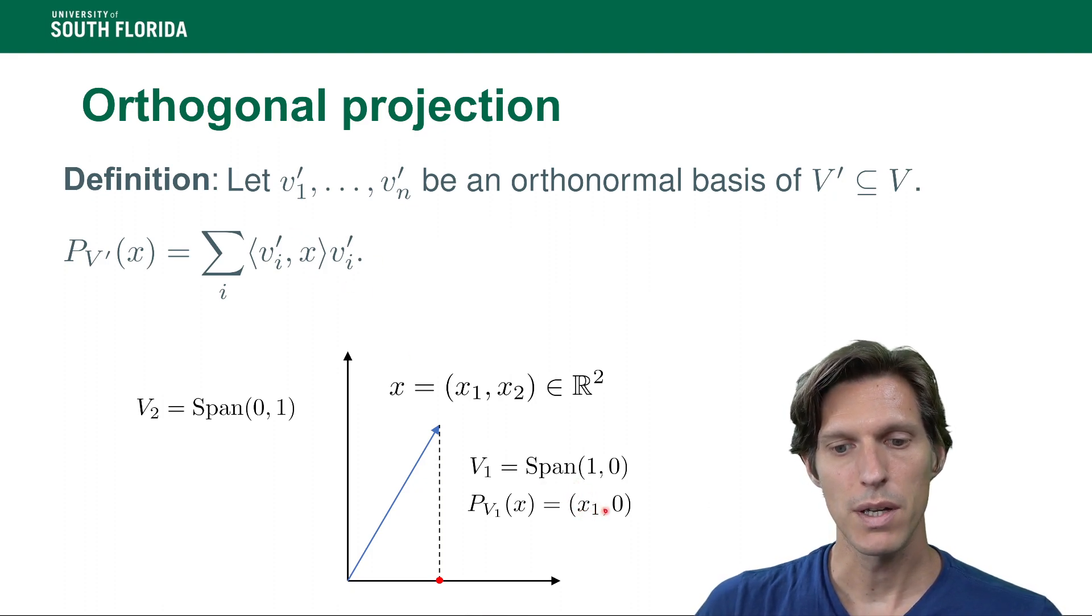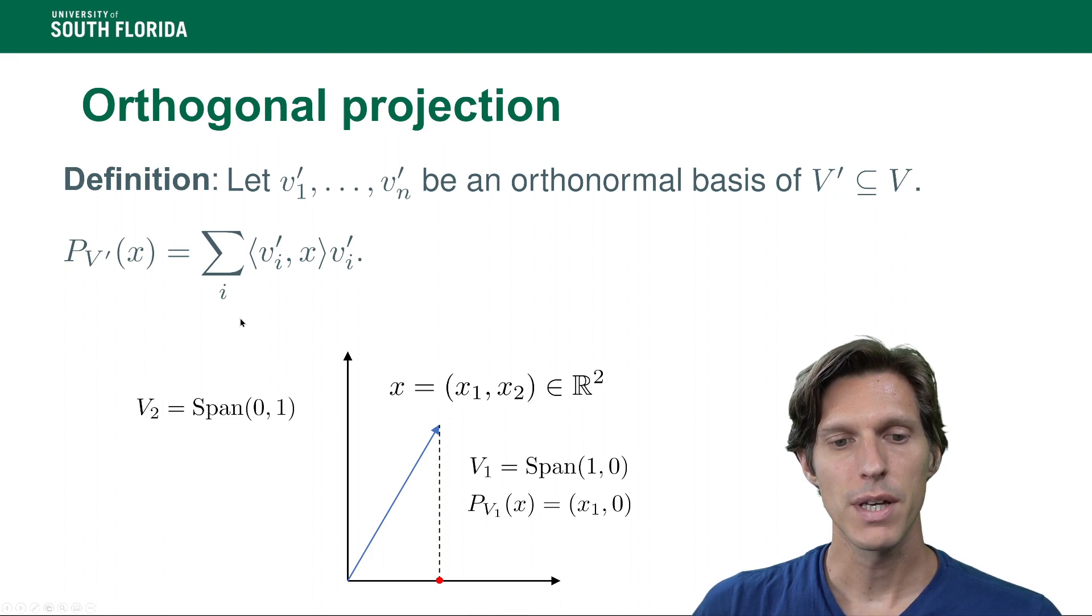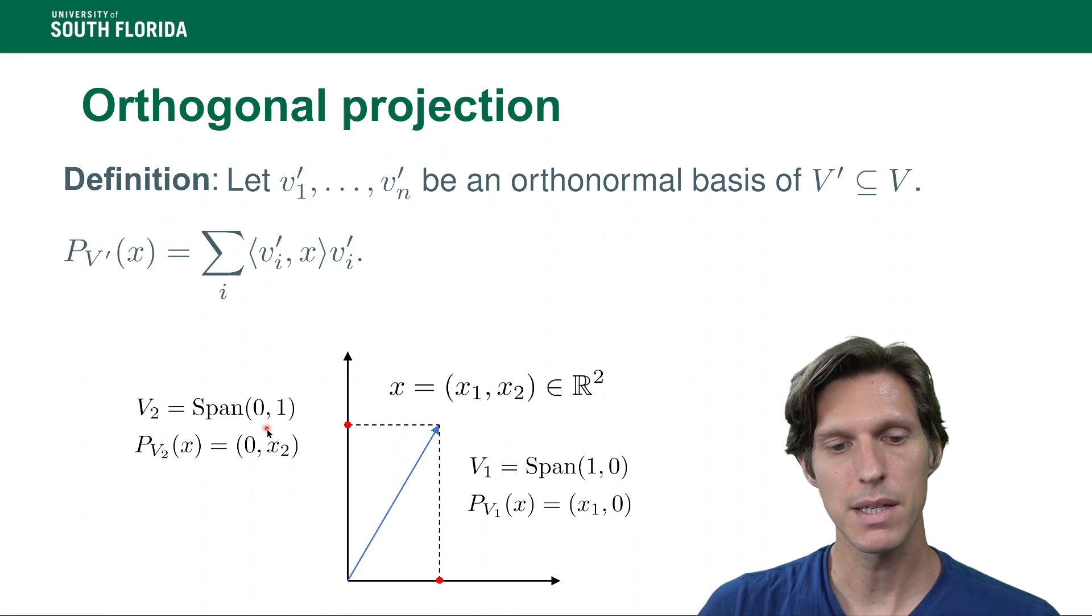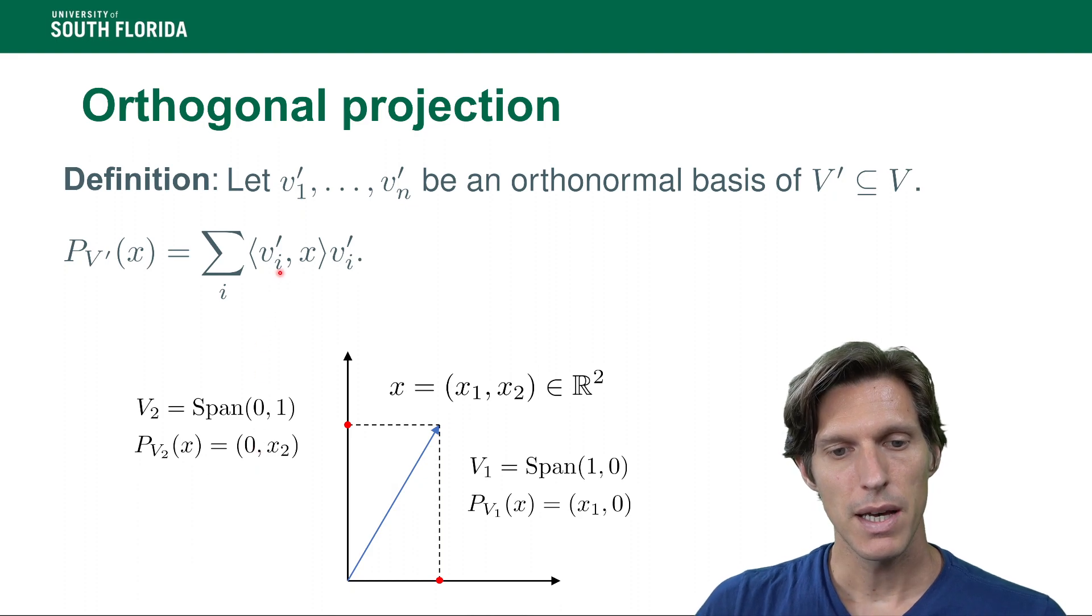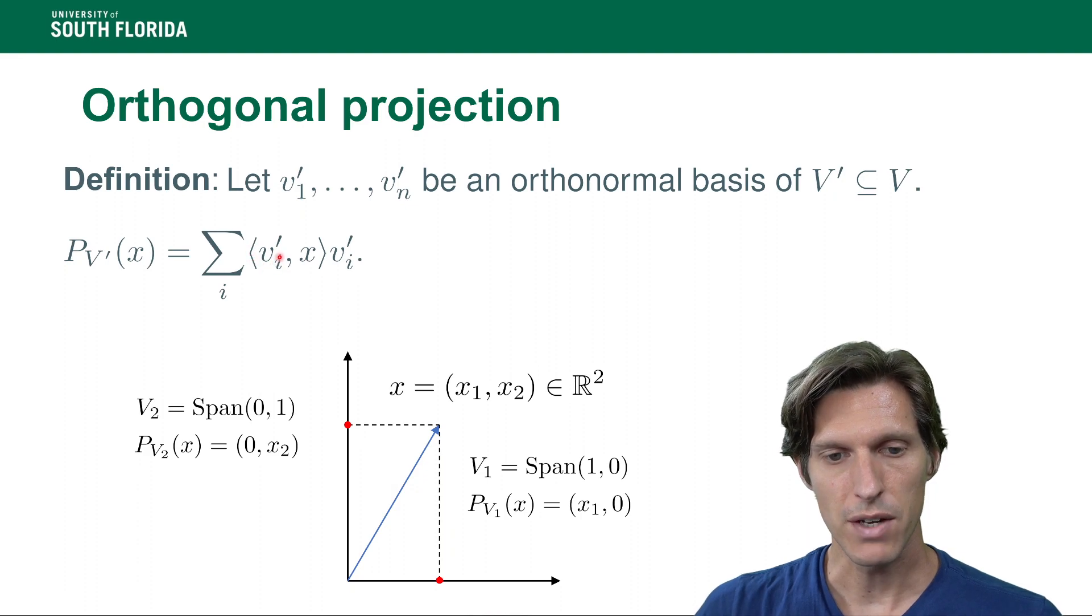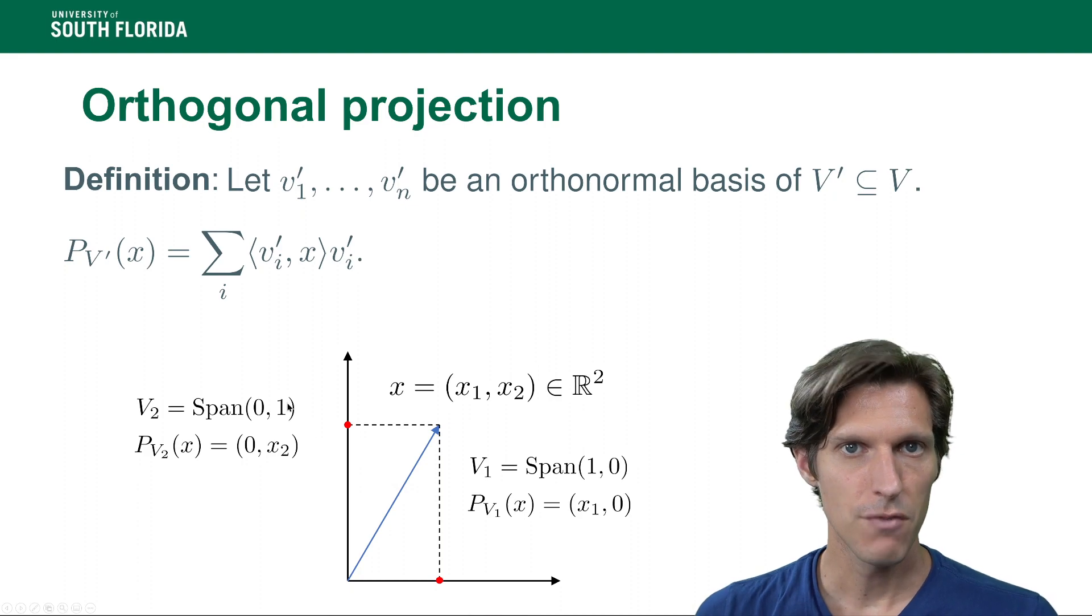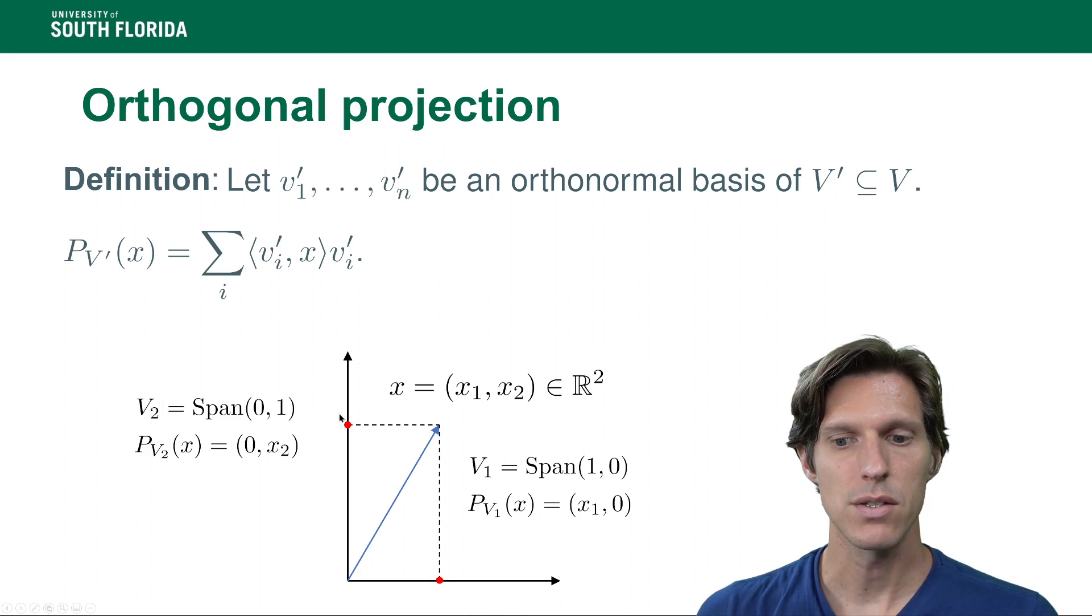And if we replace V by V₂ which is the span of the vector (0,1), then the projection onto V₂ of a given x is ⟨x,(0,1)⟩ times (0,1), so that's (0,x₂). So we have two examples here of orthogonal projections on very simple kinds of vector spaces.